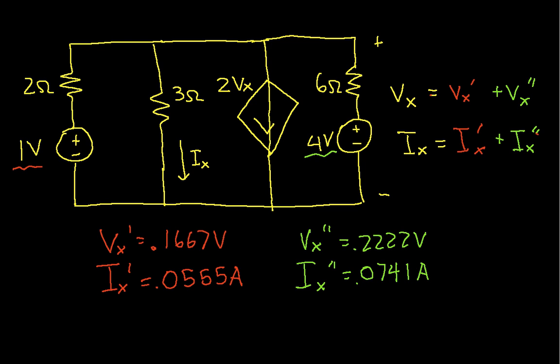Now we add Vx prime and Vx double prime to get Vx = 0.3889 volts. And Ix is the sum of Ix prime and Ix double prime, which works out to 0.1296 amps.